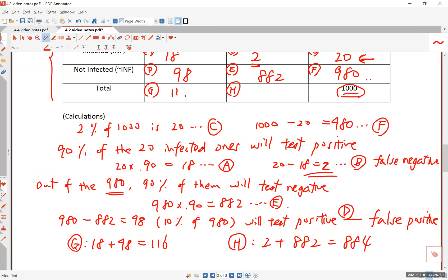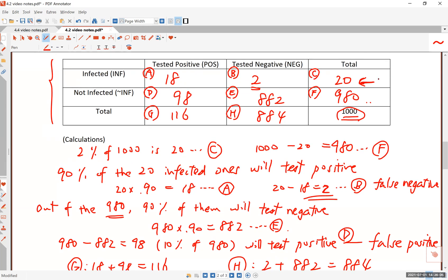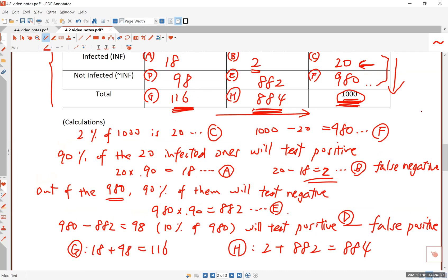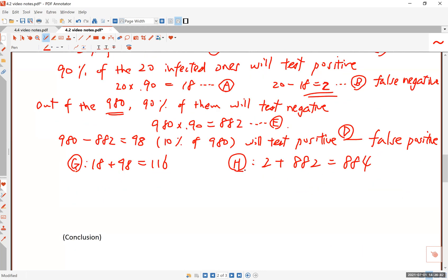Let's enter these numbers in the chart: 116 here and 884. The sum of infected and non-infected is a thousand. Once you do these calculations, make sure you add up these two numbers for verification and you get a thousand. The same number should be the total this way and that way. This is how you fill out a table like this, again called a hypothetical thousand table, which is much easier than using complicated formulas involving conditional probabilities.